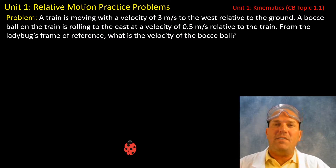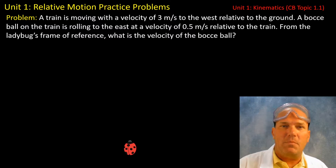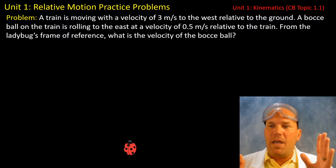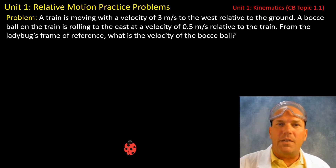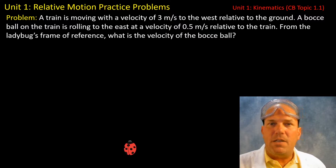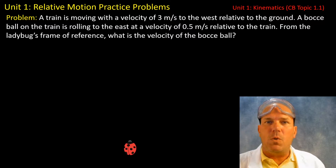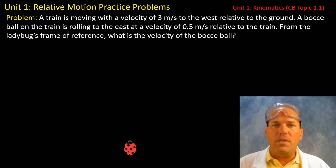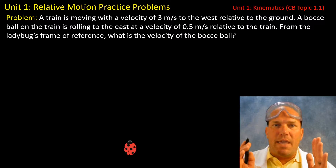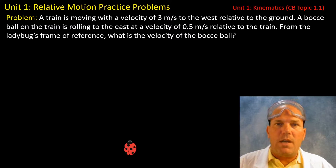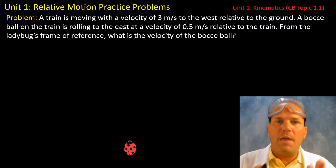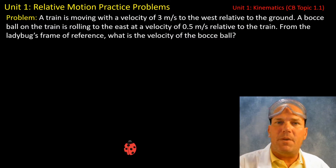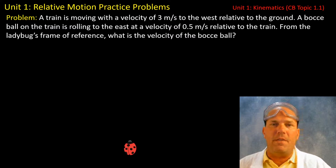What is the velocity of the bocce ball? We have a train moving to the west; on that train is a bocce ball rolling to the east, and stationary on the ground is a ladybug. We want to describe the motion of the bocce ball from the frame of reference of the ladybug.